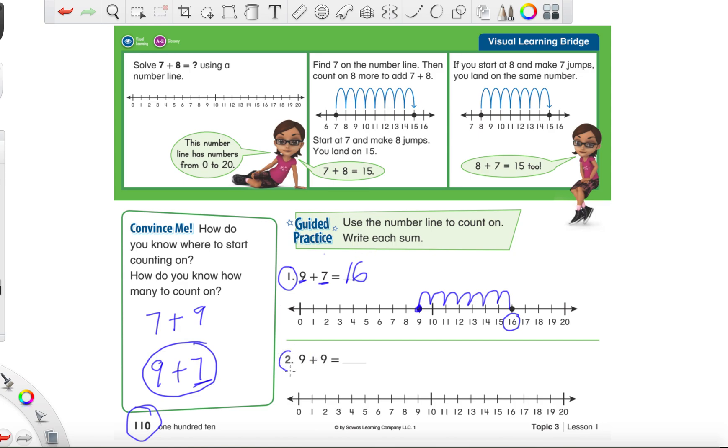So go ahead and try number two completely on your own. It's nine plus nine. So we start at nine and make nine jumps. Go ahead, give it a try. See what answer you get. Okay, if you're still working on this, pause the video. All right, now is your time to pause it if you're still working. Take your time. When you're ready, hit play and check your work.